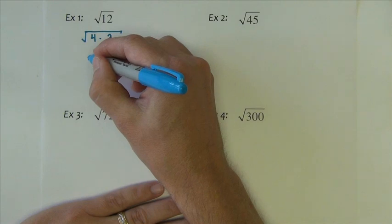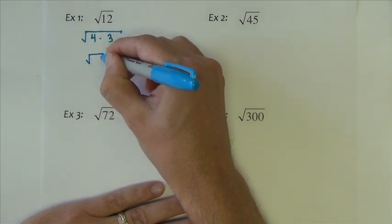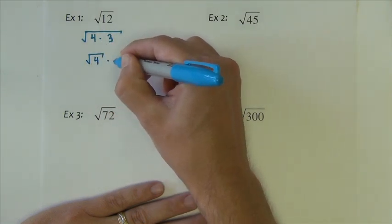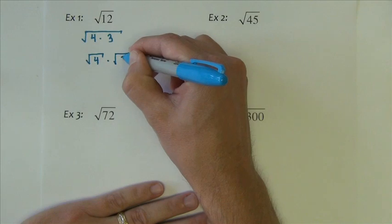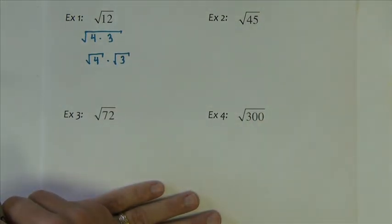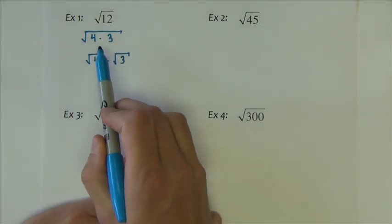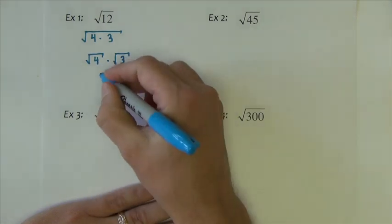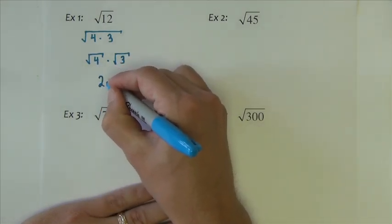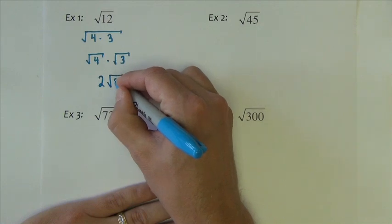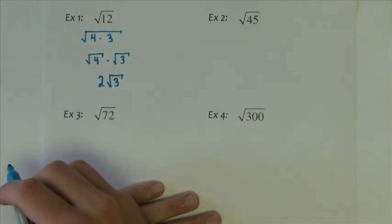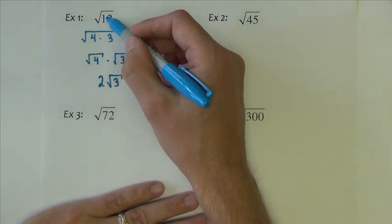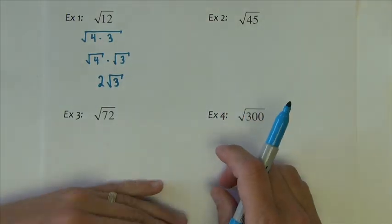So 12 could be rewritten as 4 times 3. Now the product property says that then that's the same as square root of 4 times square root of 3. And notice that the first radical here, the square root of 4, is a perfect square. So we go ahead and take its square root. The square root of 4 is 2. We leave the square root of 3. So simplified square root of 12 is 2 square root of 3.